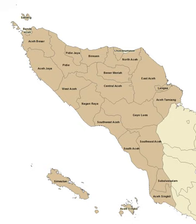A Regency is a political subdivision of a province in Indonesia. The Indonesian term Kabupaten is also sometimes translated as 'municipality'. Regencies and cities are divided into subdistricts. The English name 'Regency' comes from the Dutch colonial period, when Regencies were ruled by Bupati and were known as Regentschap, Kabupaten in Javanese and subsequently Indonesian.